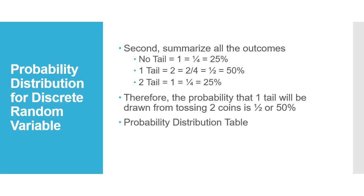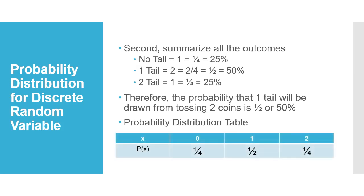To construct the probability distribution table, we have x representing the number of tails, and P(x) as the probability distribution function. For zero tails, P(x) = 1/4 or 25%. For one tail, P(x) = 1/2 or 50%. And for two tails, P(x) = 1/4 or 25%.